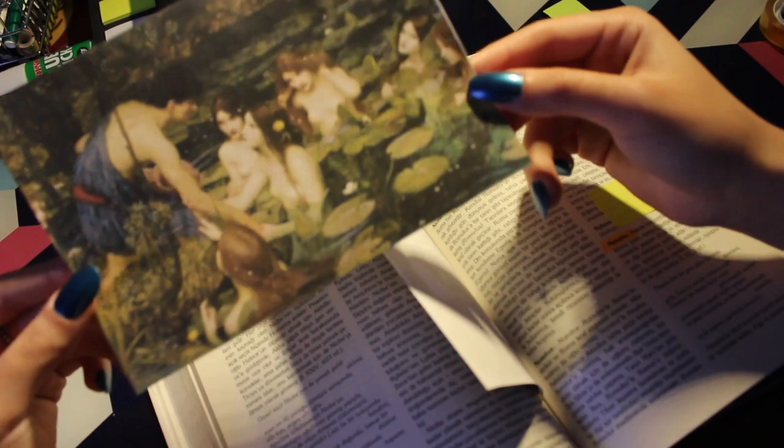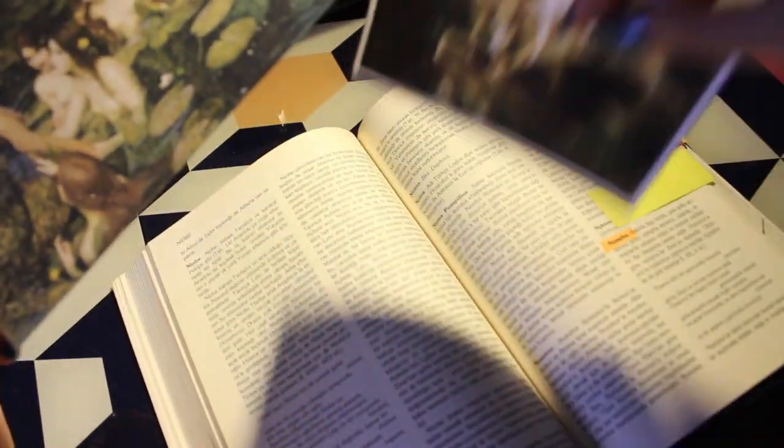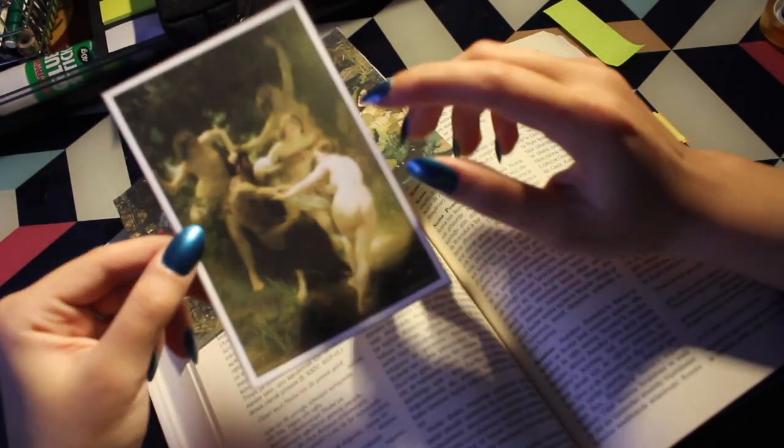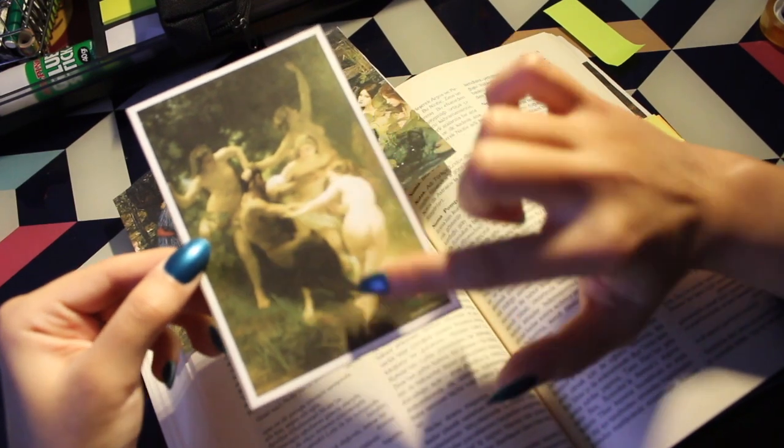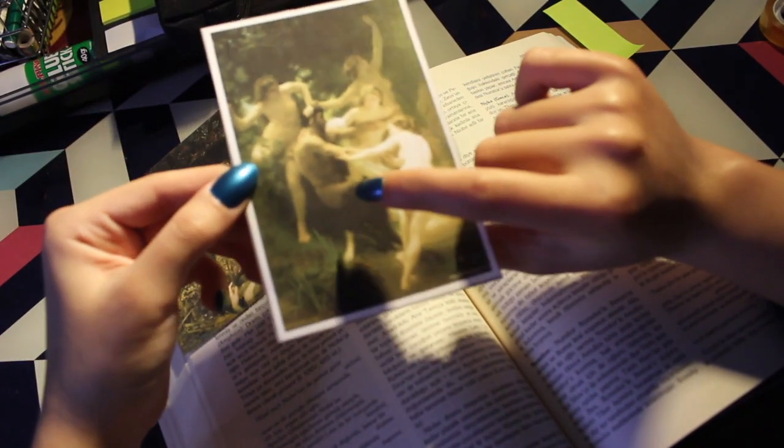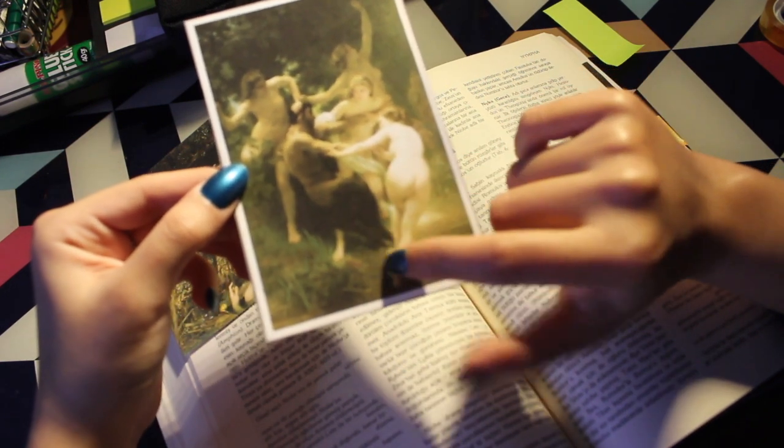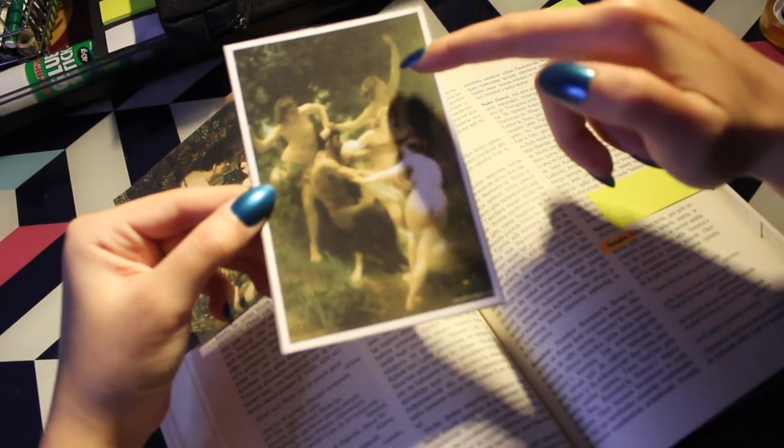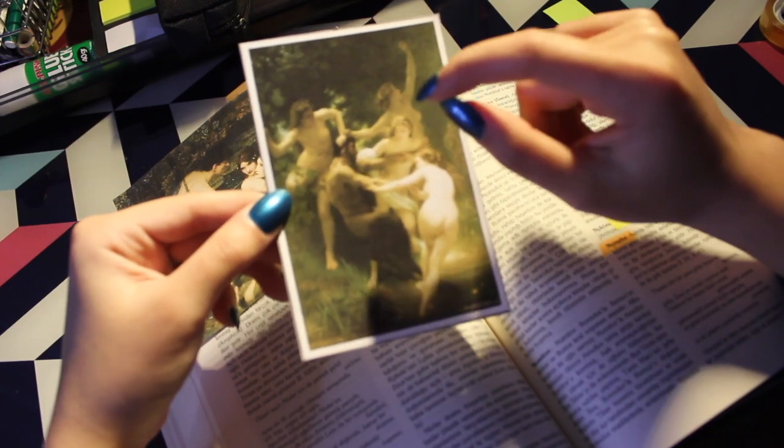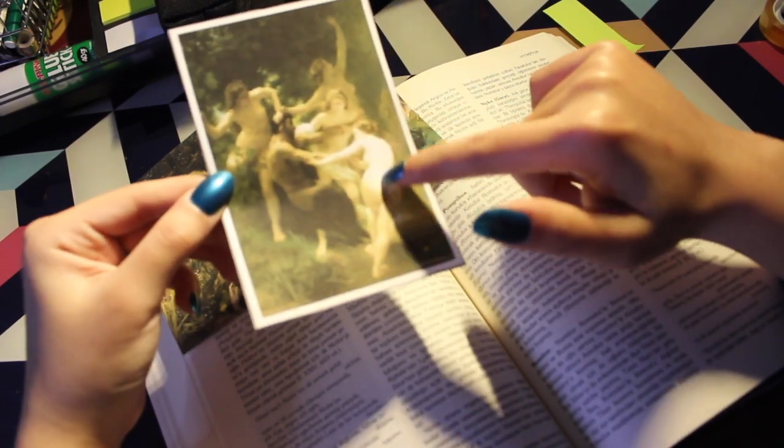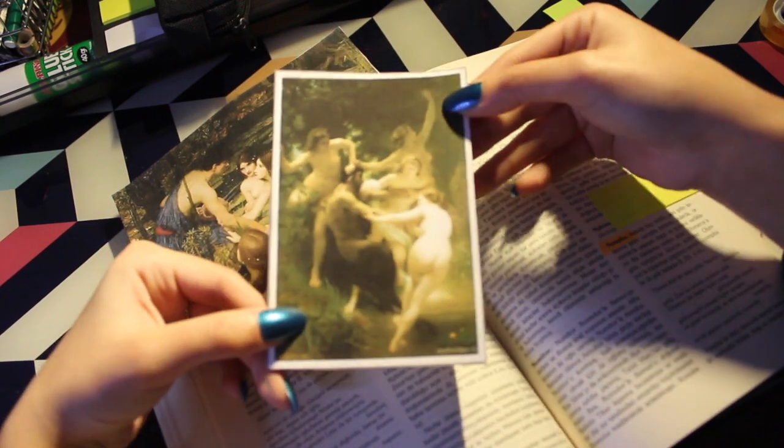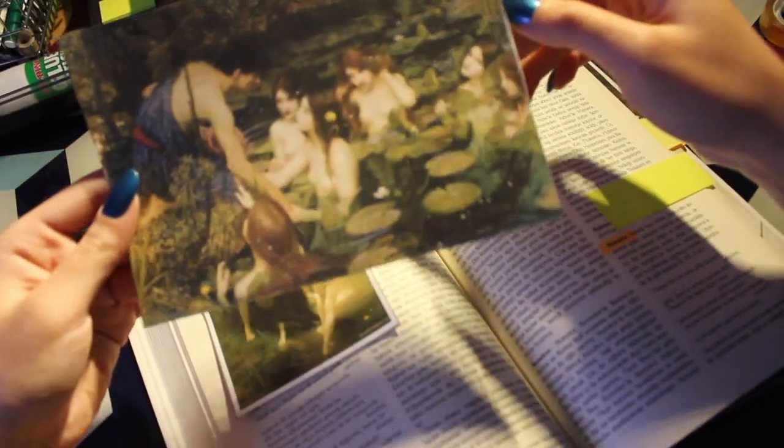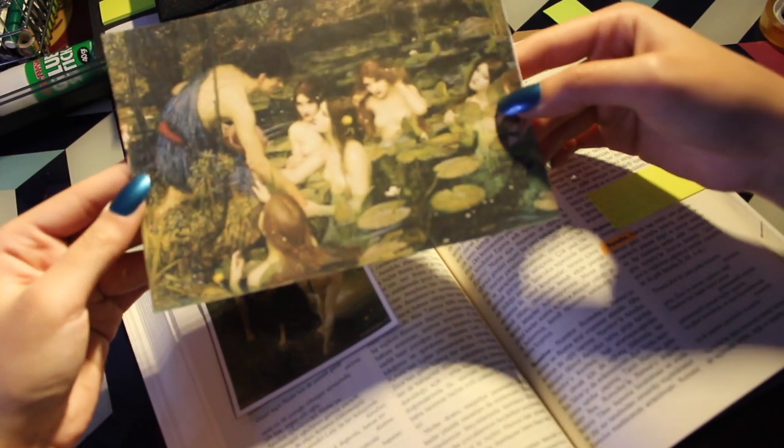Next are the nymphs. It may not be very visible, but half of his body is in the form of a goat - this is a satyr. Those around him are nymphs. I briefly call them fairies.